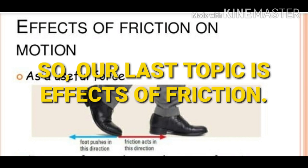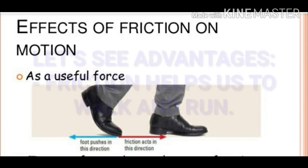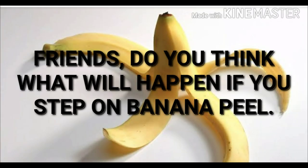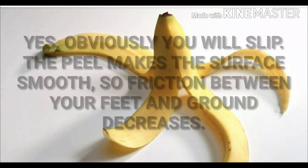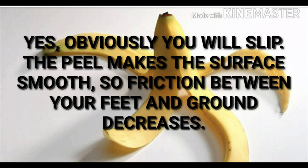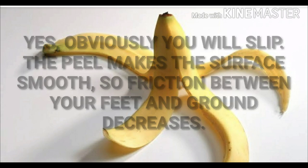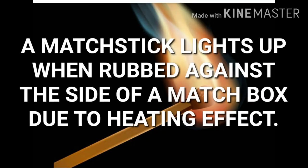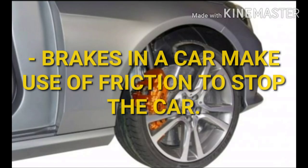Our last topic is the effects of friction. Advantages: Friction helps us to walk and run. If you step on a banana peel, you will slip because the peel makes the surface smooth and friction between your feet and the ground decreases. Friction can also produce heat — a match stick lights up when rubbed against the side of a matchbox due to the heating effect. Brakes in a car also make use of friction to stop the car.